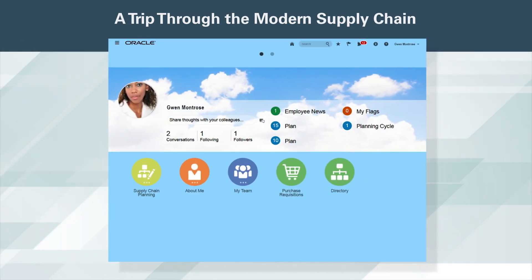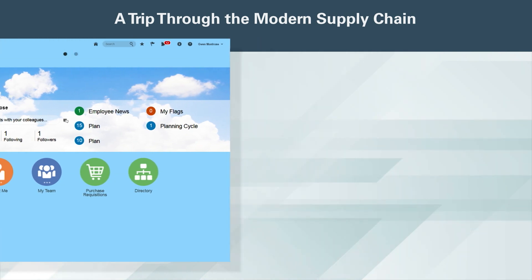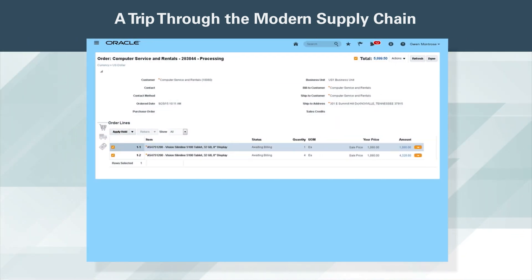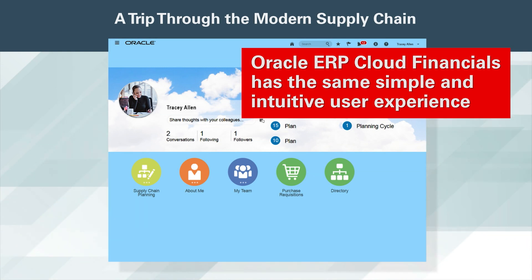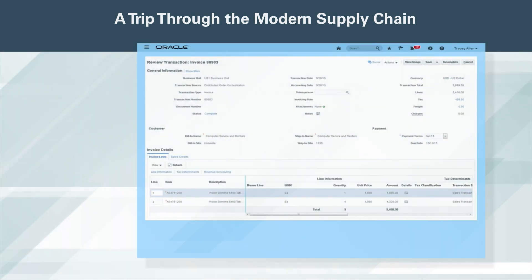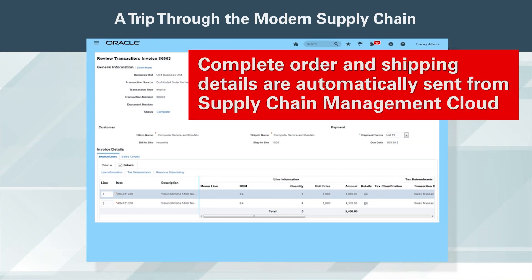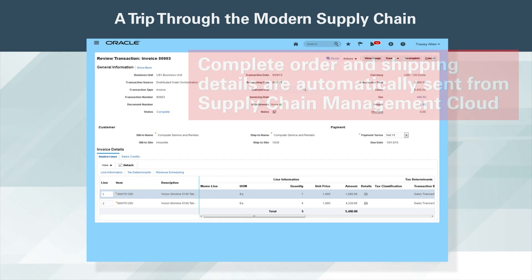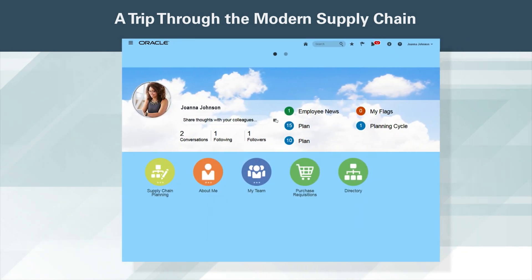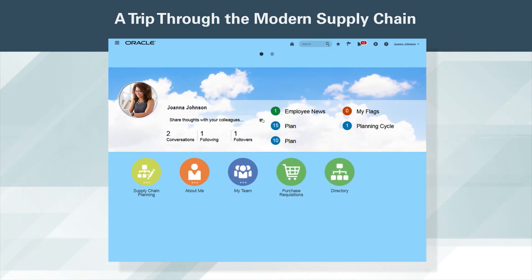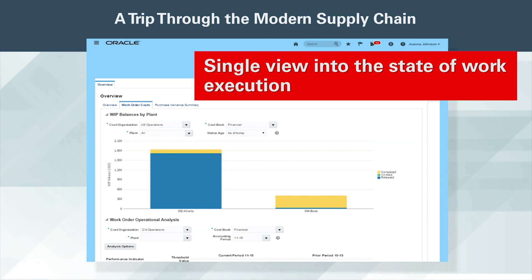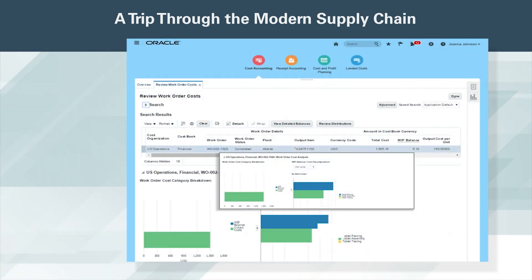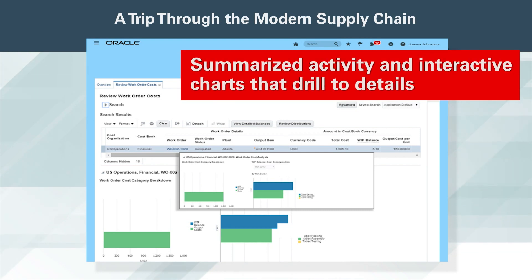The complete integrated business flow provides real-time visibility throughout the entire supply chain process. The sales order has been updated and is awaiting billing. Accounts Receivables is using Oracle ERP Cloud Financials and has the same simple and intuitive user experience. Complete order and shipping details are automatically sent from Supply Chain Management Cloud, streamlining the invoice process and preventing billing errors. Inventory and Cost Management Cloud provides the cost accountant comprehensive visibility and management of material movements, warehouse work and product costs across the supply chain.